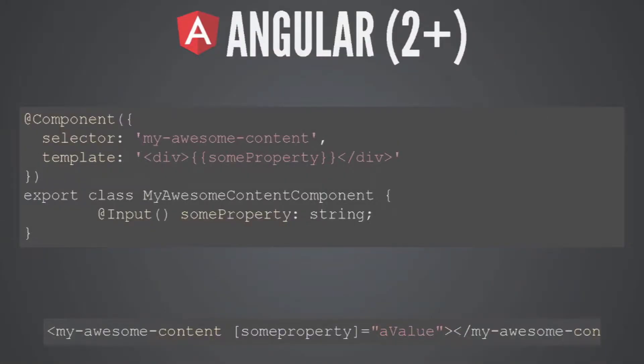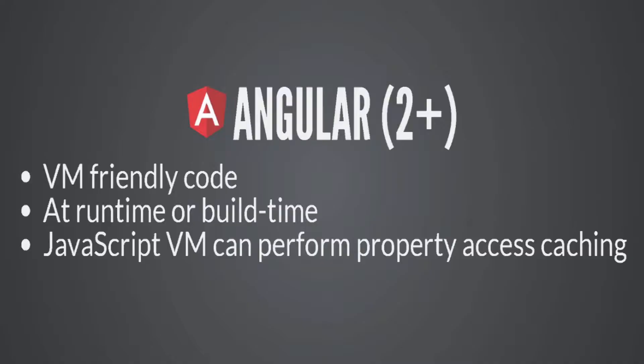Then Angular 2 onwards came along. Here we have an Angular 2 component — it also has a very similar template. But you can see the decorators: the component and the input decorators. Those things need to be compiled as well. But instead of using the same dynamic style for rendering and change detection that AngularJS used, the new Angular framework generates virtual machine-friendly code, either at runtime or at build time. This allows the JavaScript virtual machine to perform property access caching and execute the change detection and rendering logic much faster.